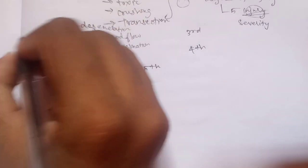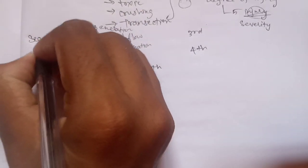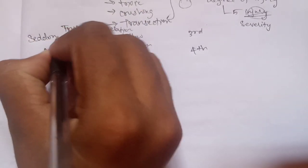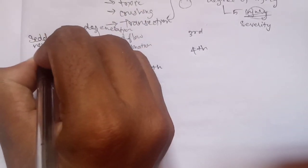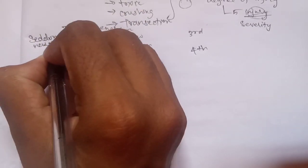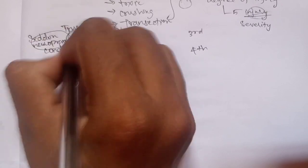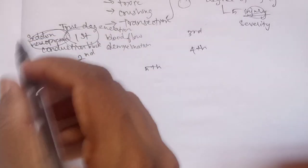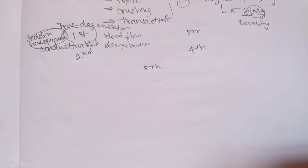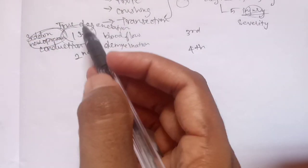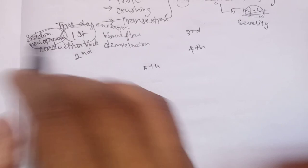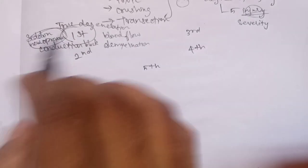The first degree is called Neurapraxia. Neurapraxia — if you remove the pressure, it will recover in 1 to 2 weeks.